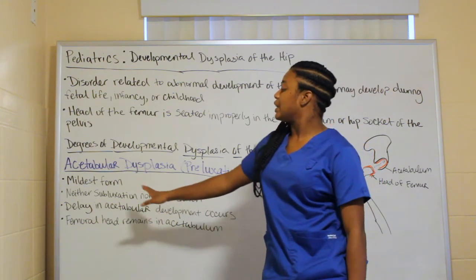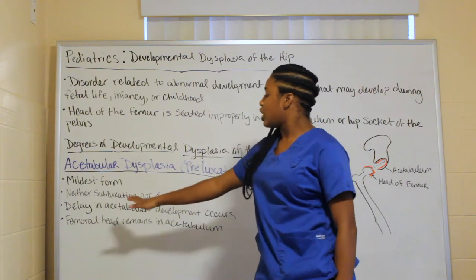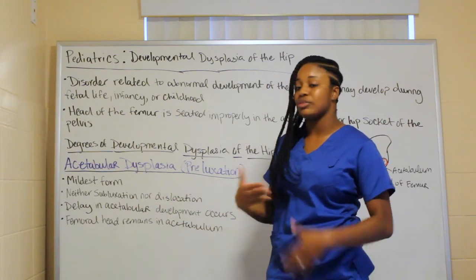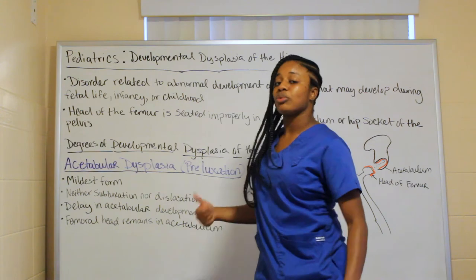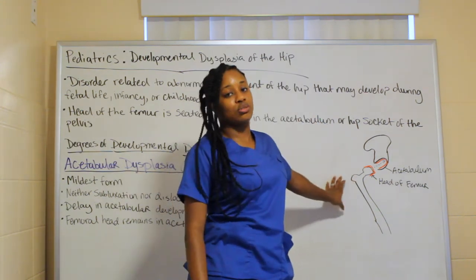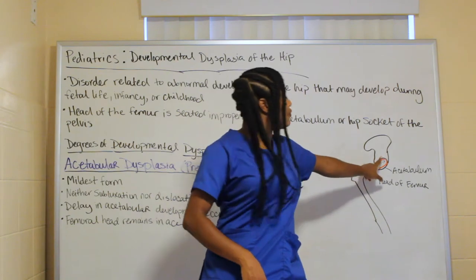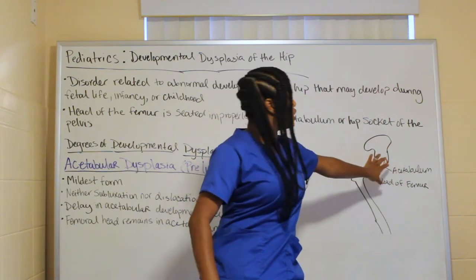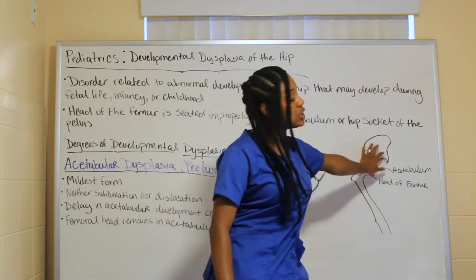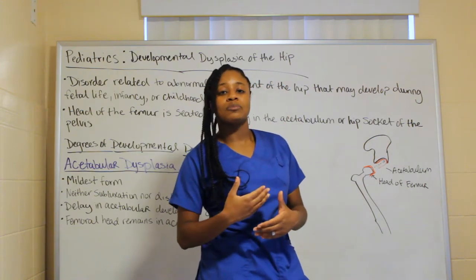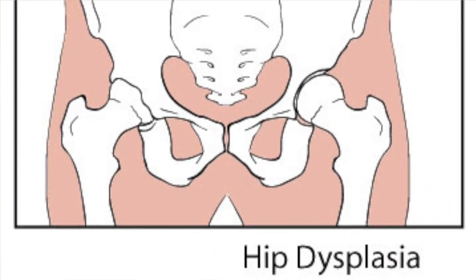There are three different forms, and the first is neither a subluxation nor a dislocation. There is a delay in acetabular development, but the femoral head remains in the acetabulum. It is poor development of the acetabulum itself. So even though the femoral head is sitting in the acetabulum, because this is not developed properly, there will still be problems with the hip area — it's not in properly, but it is still within the acetabulum.